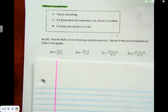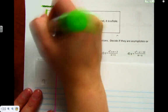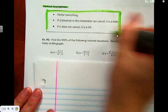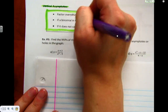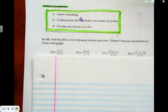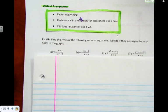We did vertical asymptotes last year — this isn't new. The piece we're adding in is the hole. Here is the method: you factor everything. If the binomial on the bottom cancels, it's a hole. If it doesn't cancel, it's a vertical asymptote.